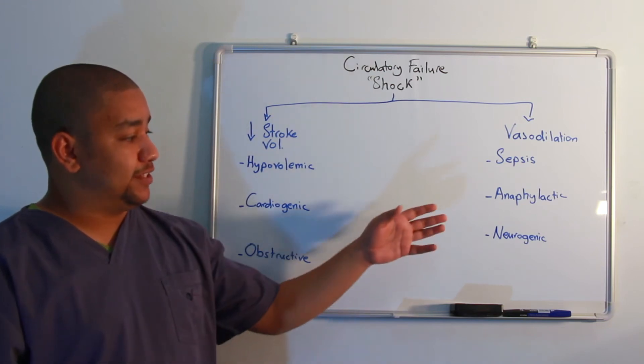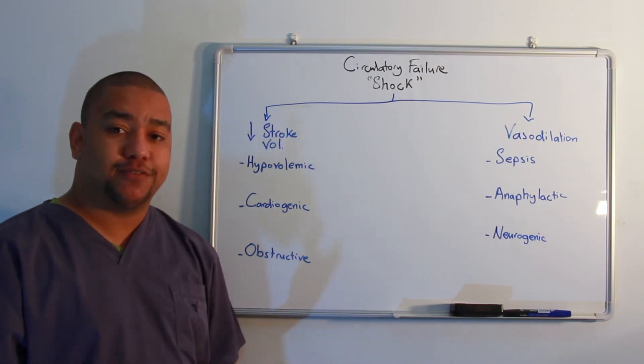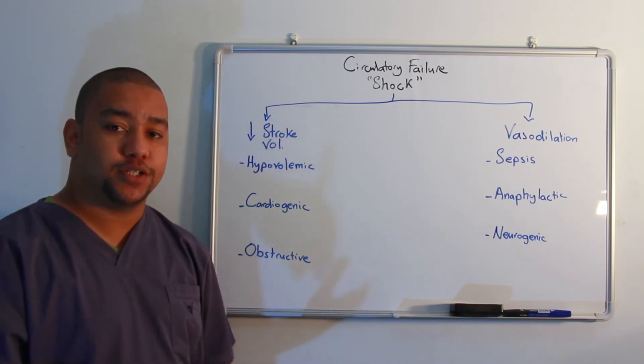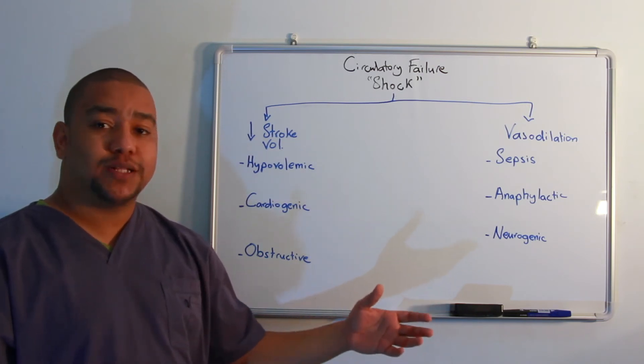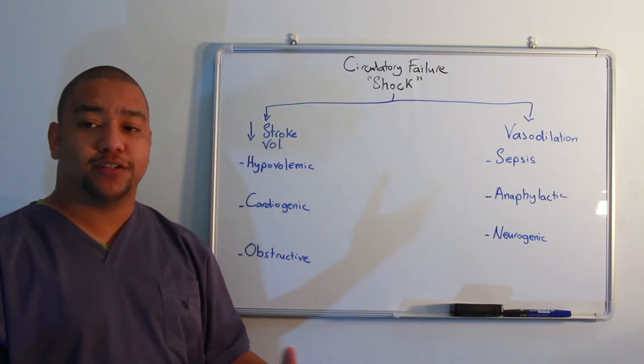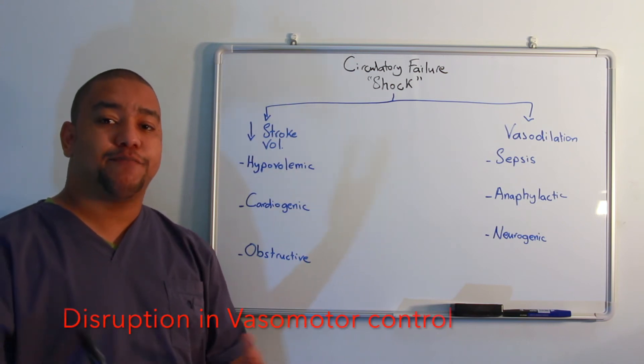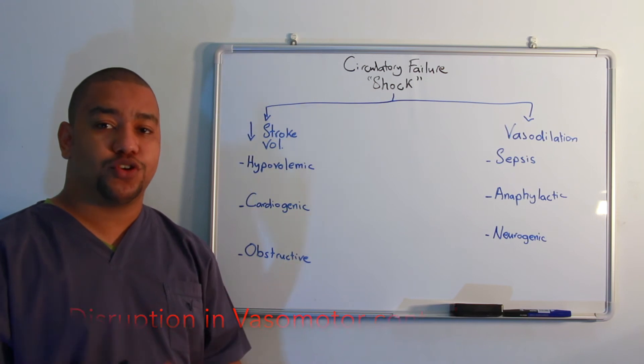Anaphylactic shock is an inappropriate vasodilation due to an allergen, such as a bee sting. Neurogenic shock occurs when there is major brain or spinal trauma, which in turn leads to inappropriate vasomotor control.